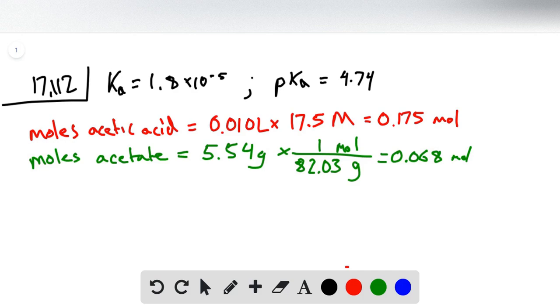So now all we have to do is use the Henderson-Hasselbalch equation to calculate pH. So pH is equal to pKa which is 4.74 plus the log of base over acid. So it's important here to note that if we're plugging the values into the Henderson-Hasselbalch equation...